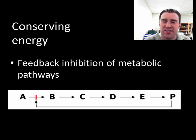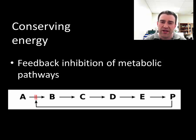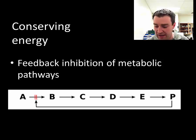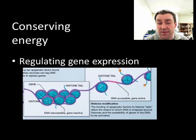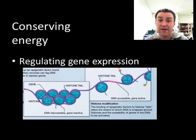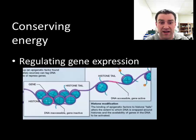Many organisms have evolved strategies to conserve energy. At the micro level, metabolic pathways are often regulated by their end product, shutting off pathways when they've already produced what's needed — preventing ATP expenditure when it's not necessary. In molecular genetics we'll also see that regulating gene expression is important: turning off genes when those proteins are no longer needed, and turning them on when the proteins are really important.